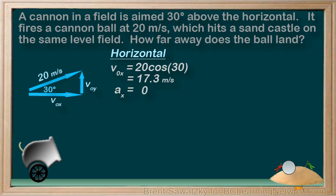Again, there are no horizontal forces. The displacement, dx, is the horizontal distance between our cannon and the castle we plan to hit. T is the time the cannonball spends in the air, and this is unknown at this point.